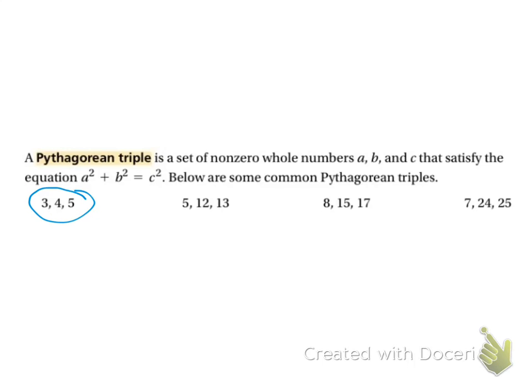So 3, 4, 5, 5, 12, 13, 8, 15, 17, and 7, 24, 25.